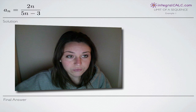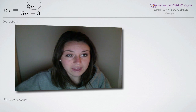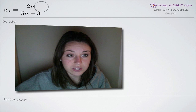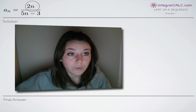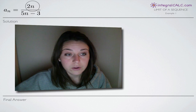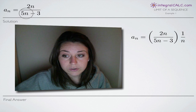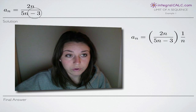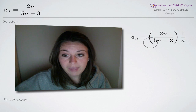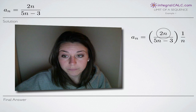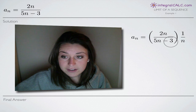The easiest way to find the limit of a sequence when we have a rational function like this — a fraction with n related to terms in both the numerator and the denominator — is to divide through by n. So we're going to divide each term in both the numerator and the denominator by n.